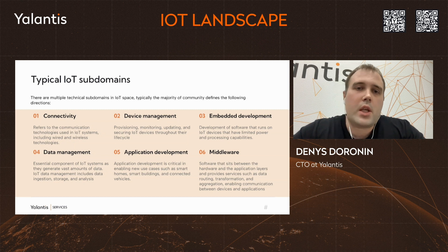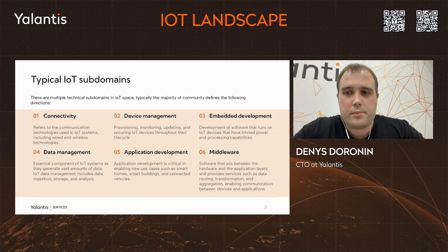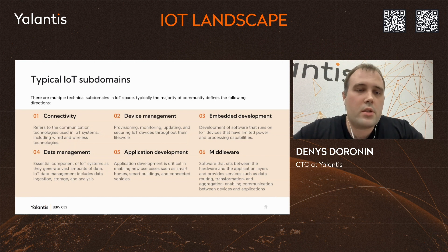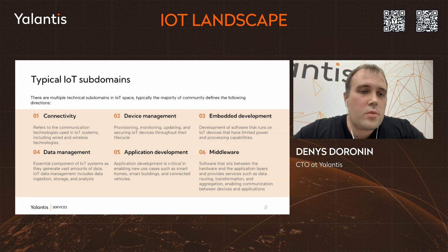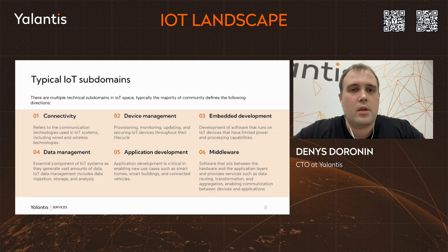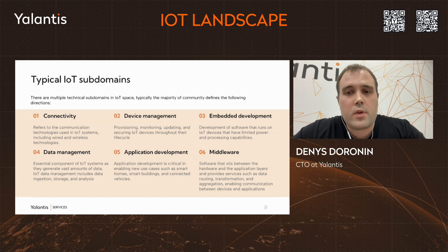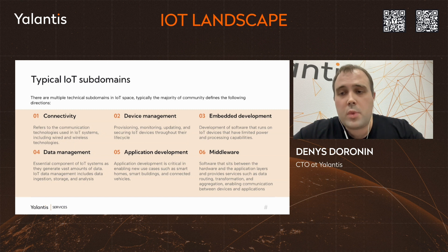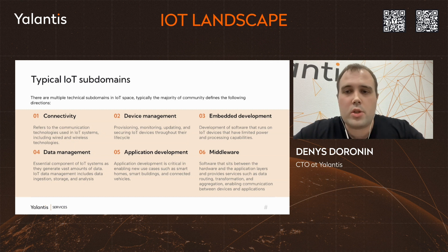As for embedded development, we focus on developing firmware or custom applications for your edge devices. The last three services are related to interconnecting everything in terms of physical devices with your end users. Data management is a really essential component of any IoT system that can process data and build valuable insights from your edge devices. Application development is the direction where you focus on developing end-to-end flows for your users. And middleware is essentially data routing, or sometimes used for data transformation and aggregation.